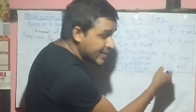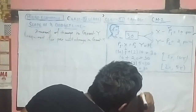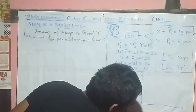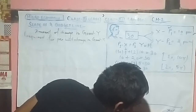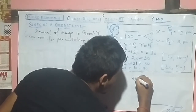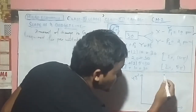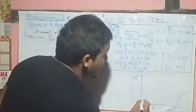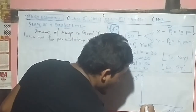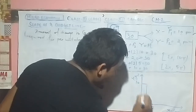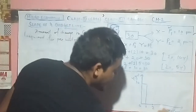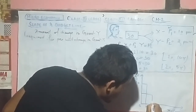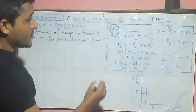Now if I try to represent this in a diagram — on the horizontal axis we have Good X and on the vertical axis we have Good Y. The first combination is 1X and 10Y, so at X equal to 1 we plot Y equal to 10. The next combination is 2X and 5Y, so at X equal to 2 we plot Y equal to 5.